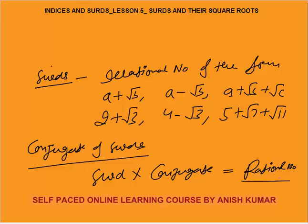A rational number means a number which can be written in the form of p by q. You can see the details of types of numbers in the numbers chapter.